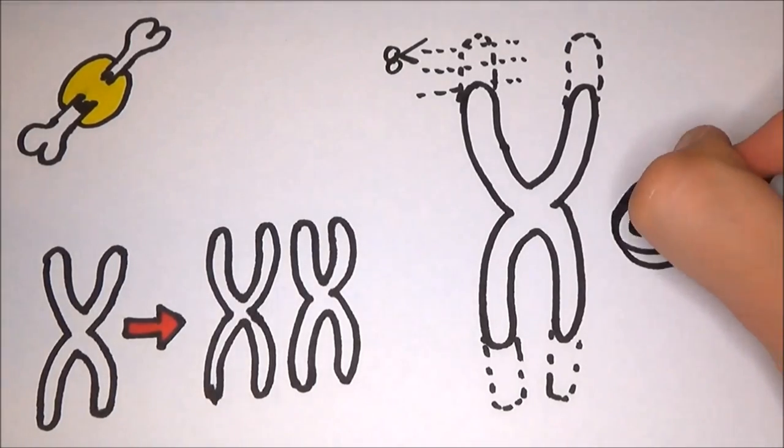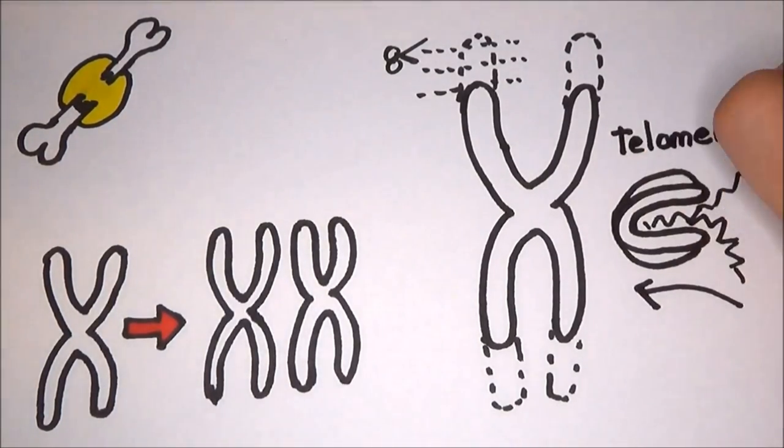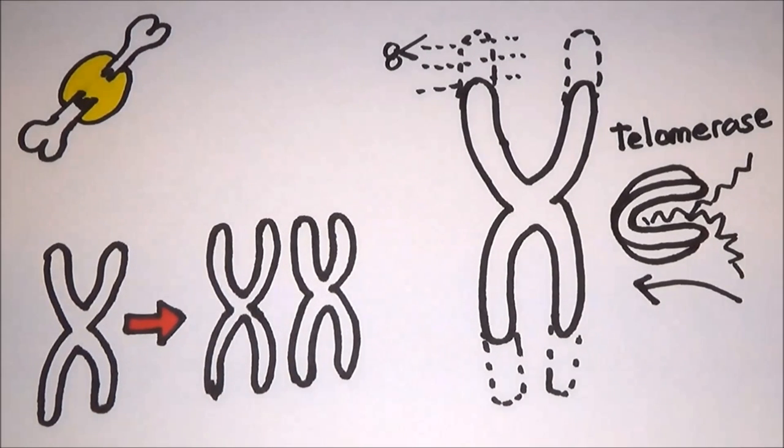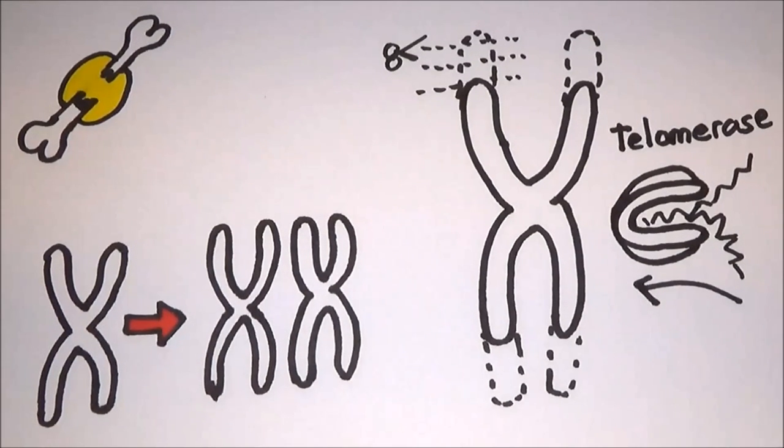In some types of cells, such as stem cells, an enzyme replaces the telomeres after each division, meaning the cells can, in theory, live forever. Harnessing this ability may bring us one step closer to eternal youth.